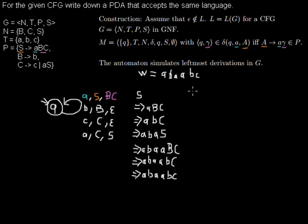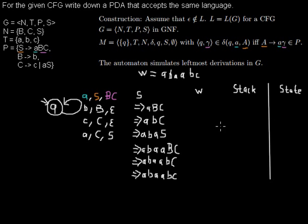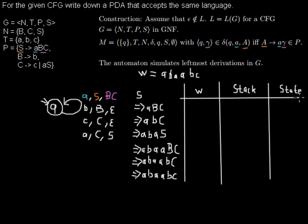Next I show you how the automaton does the same. The automaton has any word that is left to read and a stack with some symbols on it, and we are in some state. The definition says that the first symbol on the stack when the automaton starts is the start symbol from the grammar, so it will be S.